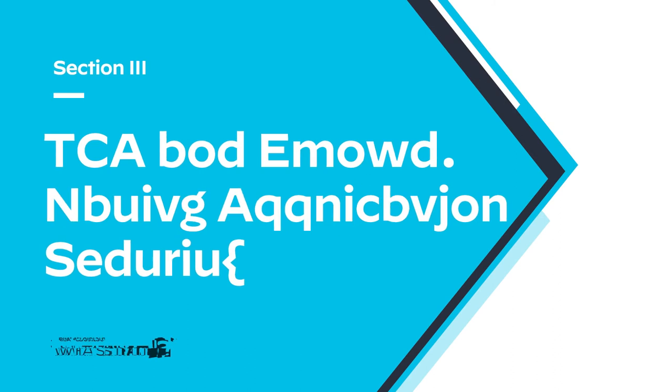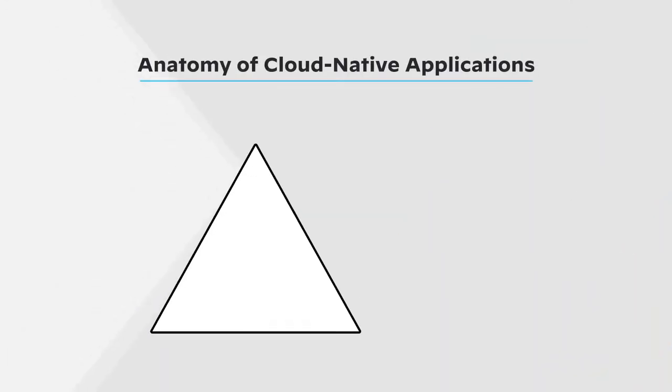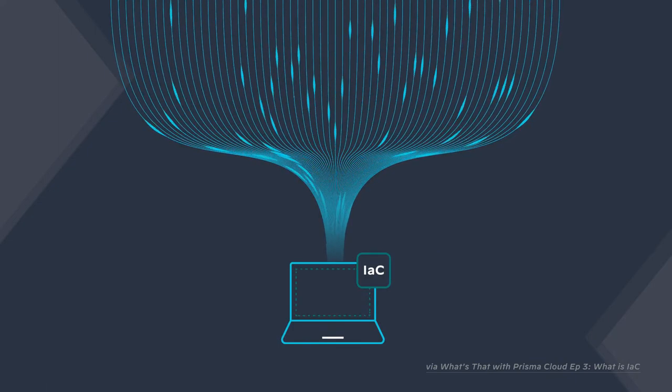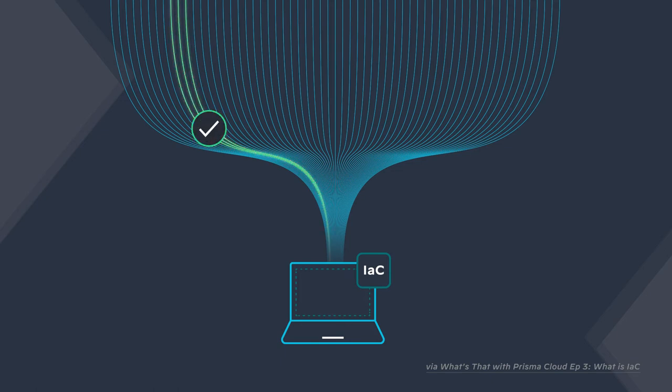The last thing I want to cover is how SCA fits into the broader cloud-native security landscape. To do this, let's explore the layers of a cloud-native application and the security measures needed for each. The foundation of a cloud-native application is the infrastructure. In code, those resources are defined and provisioned by things like infrastructure as code models and manifests. Cloud security posture management solutions monitor your cloud for misconfiguration, and IaC security shifts left to prevent misconfiguration in the first place.